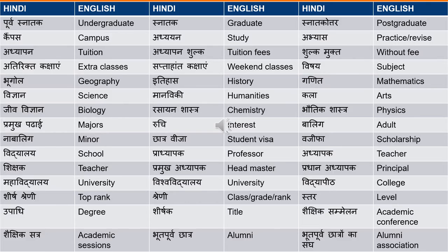'Campus' can be translated literally as campus — there is no equivalent Hindi word for it, so it's better to translate it as is. 'Adhyayan' means study. 'Abhyas' means to practice or to revise — for example, 'is paath ka hum punah abhyas karein' means I want to practice or revise this lesson again. 'Adhyapan' means tuition. 'Adhyapan shulk' is tuition fees. 'Shulk mukt' means without fee.